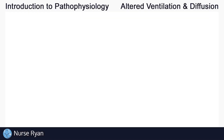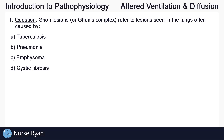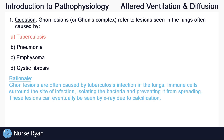Starting off with question number one. Ghon lesions, or Ghon's complex, refer to lesions seen in the lungs often caused by — I'll leave a bit of a break where you can pause the video and think about the answer. The answer here is A: tuberculosis. Ghon lesions are often caused by tuberculosis infection in the lungs. Immune cells surround the site of infection, isolating the bacteria and preventing it from spreading. These lesions can eventually be seen by x-ray due to calcification.